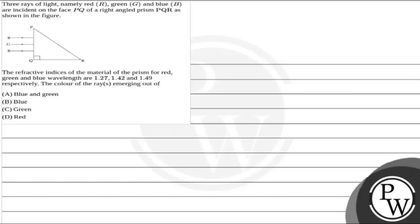Hello watcher, let's read the question. The question says three rays of light, namely red, green, and blue, are incident on the face PQ of a right angle prism PQR as shown in the figure. The refractive index of the material of the prism for red, green, and blue wavelengths are 1.27, 1.42, and 1.49 respectively. The color of the rays emerging out of: (A) blue and green, (B) blue, (C) green, (D) red.